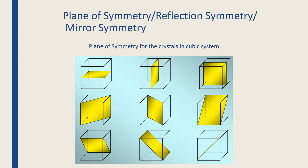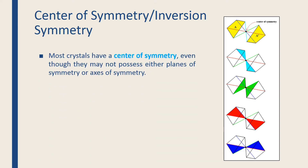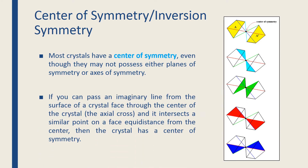For the planes of symmetry in the cubic system, which has complete symmetry elements — the center of symmetry. Imagine there is a line traveling through from one face of a crystal to another, passing through the center of the crystal. If you can pass this imaginary line from the surface through the center and intersect a similar point on a face with a similar distance from the center, then the crystal has a center of symmetry. Most crystals have a center of symmetry, even if they may not possess either planes or symmetry axes.